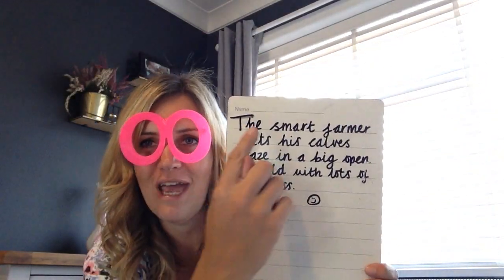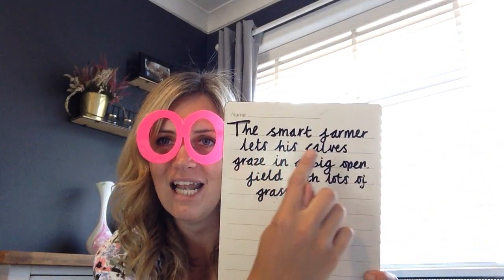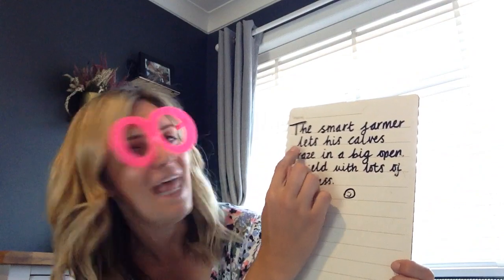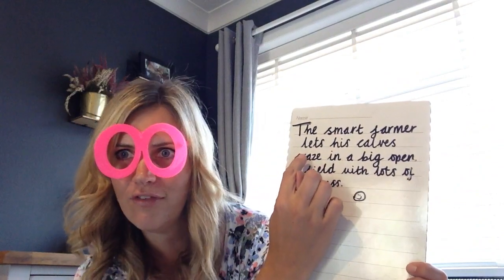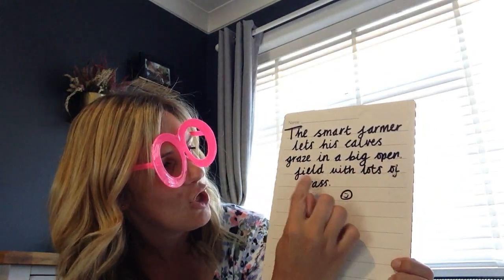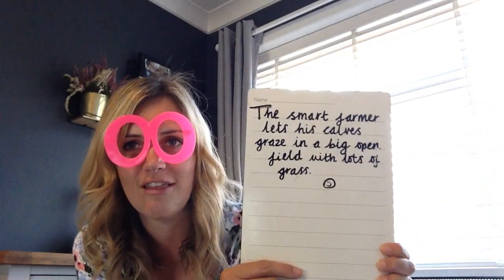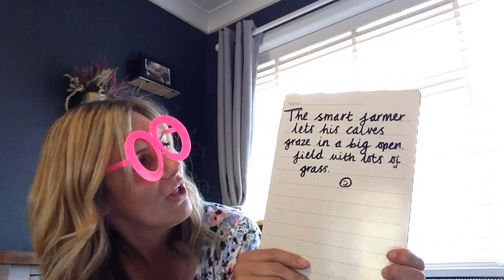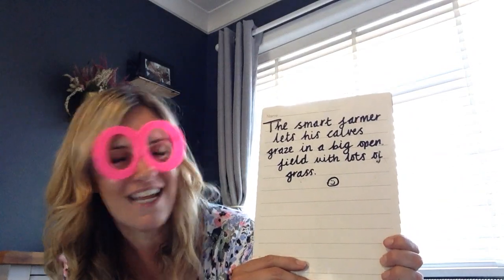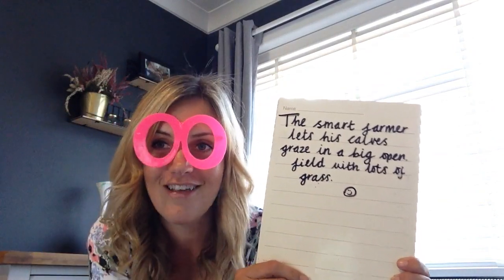Well done. Now hopefully you read: the smart farmer lets his calves graze in a big open field with lots of grass. That's a very sensible thing to do. The smart farmer lets his calves graze in a big open field with lots of grass.